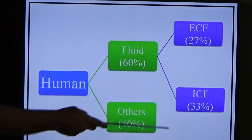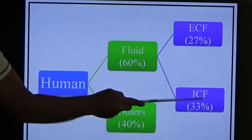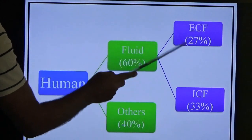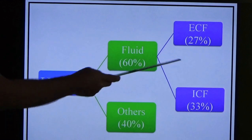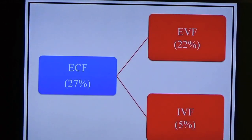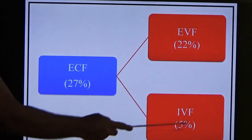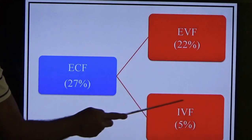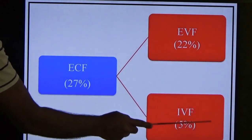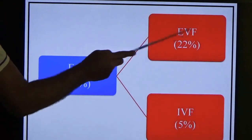Intracellular fluid is the fluid contained inside the cell. Extracellular fluid is divided into extravascular fluid and intravascular fluid. Intravascular fluid is otherwise known as blood or plasma, and it carries only 5% of the total fluid content.